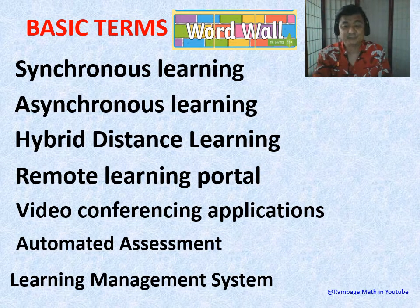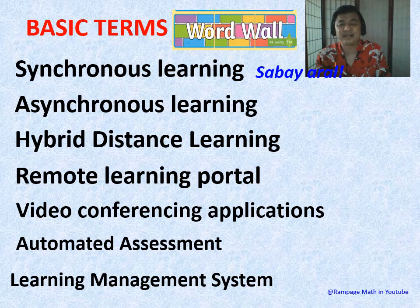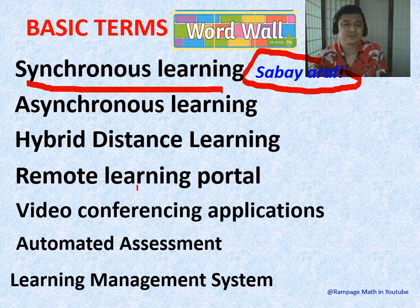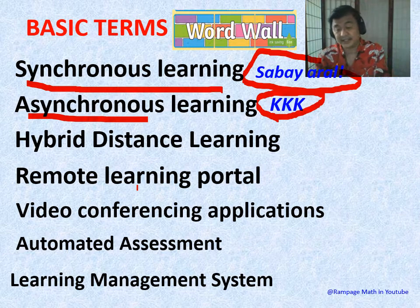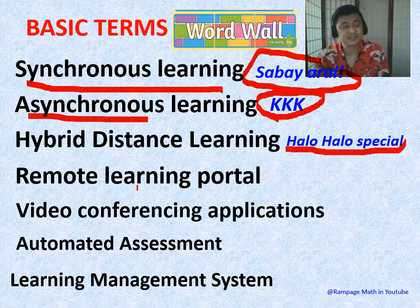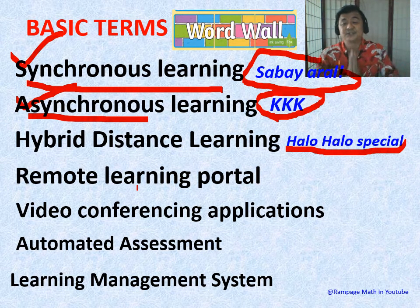Basic terms: Synchronous means learning together simultaneously — video calls, phone calls. Asynchronous is KKK — kanya-kanyang kayod, or independent learning. The teacher gives a guide and module, and you're on your own. Hybrid is a mix — sometimes synchronous, sometimes asynchronous — scheduled according to your situation and circumstances. That's equity. A remote learning portal, like Google Classroom, is the gateway for learning where names, rosters, assignments, and grades are managed.